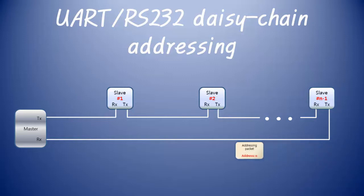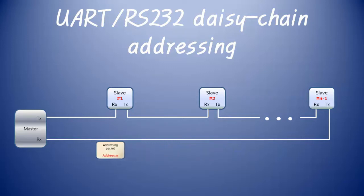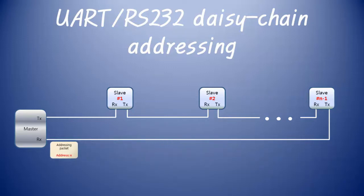Finally, when n + COMMAND_ADDRESSING + dummy is returned to the master, the master knows that the number of slave devices connected to the bus is n minus one.